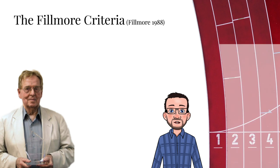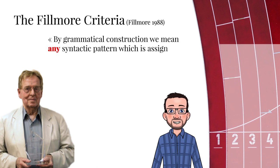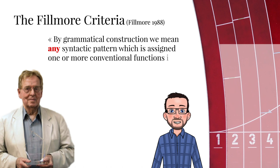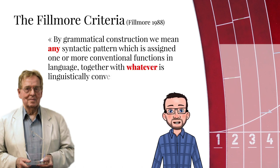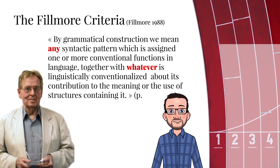The first criterion repeats what we have already said in the previous two videos. Fillmore wrote: By grammatical construction, we mean any syntactic pattern which is assigned one or more conventional functions in language, together with whatever is linguistically conventionalized about its contribution to the meaning or the use of structures containing it.